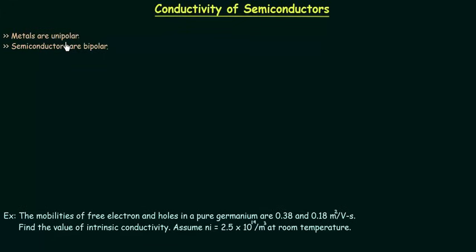Metals are unipolar — there is only one type of charge carrier in metals, that is the electron. In the case of semiconductors, we have two types of charge carriers: electrons and holes. Thus semiconductors are bipolar.